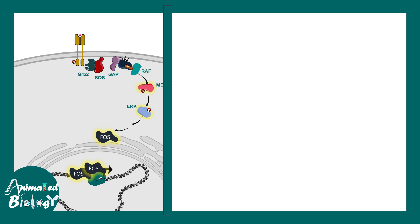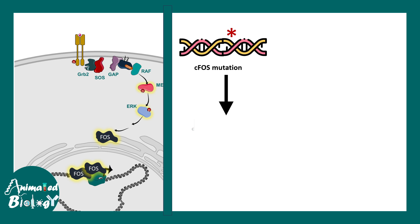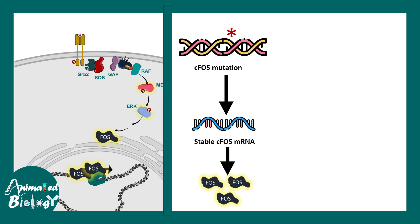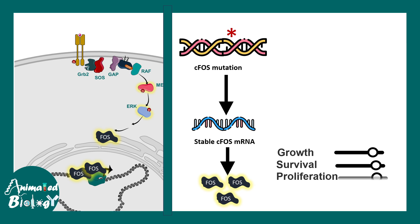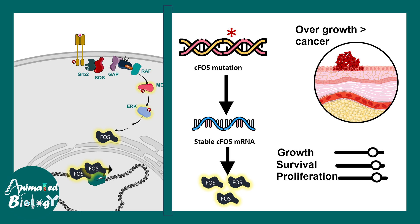Another mechanism involves altered mRNA stability from proto-oncogenic mutations. CFOS and JUN are associated with the MAP kinase signaling pathway that regulates growth and proliferation. Many CFOS mutations lead to stabilization of the mRNA so it is not degraded, causing an accumulation of CFOS protein that stays longer in the nucleus. In the presence of excess CFOS, growth and survival genes are again activated, ultimately leading to overgrowth and cancer.